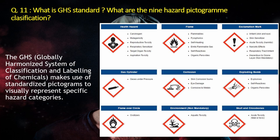The third pictogram is an exclamation mark, where skin sensitizer, irritation, and acute toxicity fall. The fourth is gas cylinder. The fifth is corrosion. The sixth is exploding bomb, where explosive, self-reactive, or organic peroxide hazards come. The seventh is for oxidizer — flammable over a circle. The eighth is environmental or non-mandatory, for example aquatic toxicity. The ninth is skull and crossbones, where acute toxicity kind of hazardous material falls.